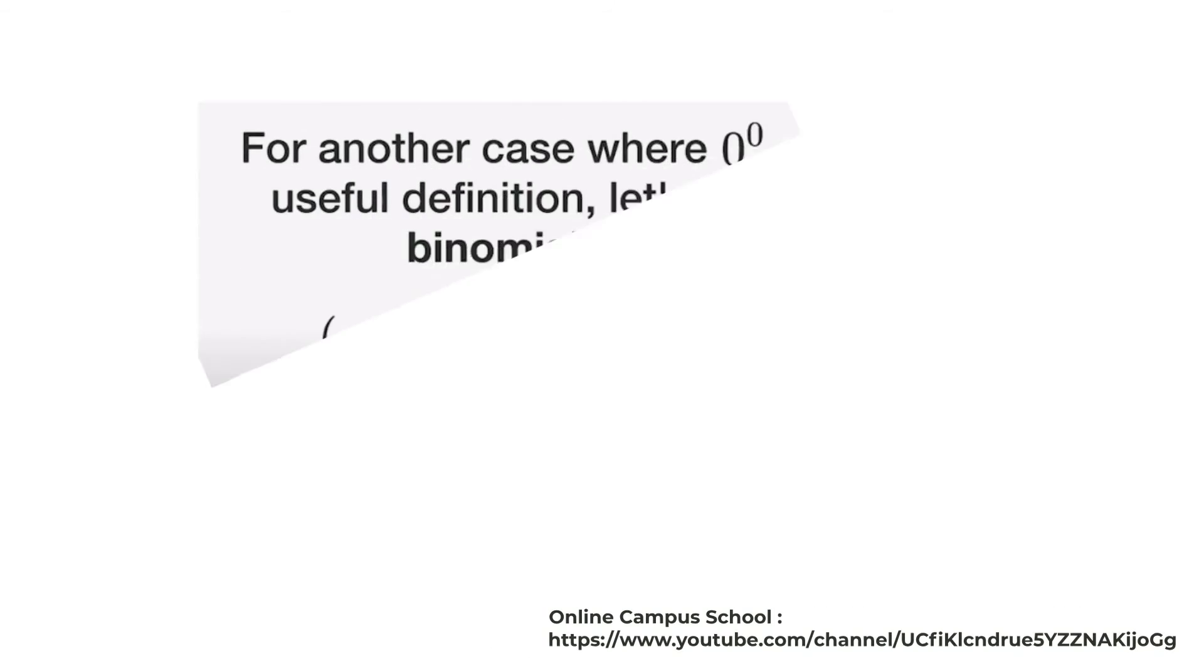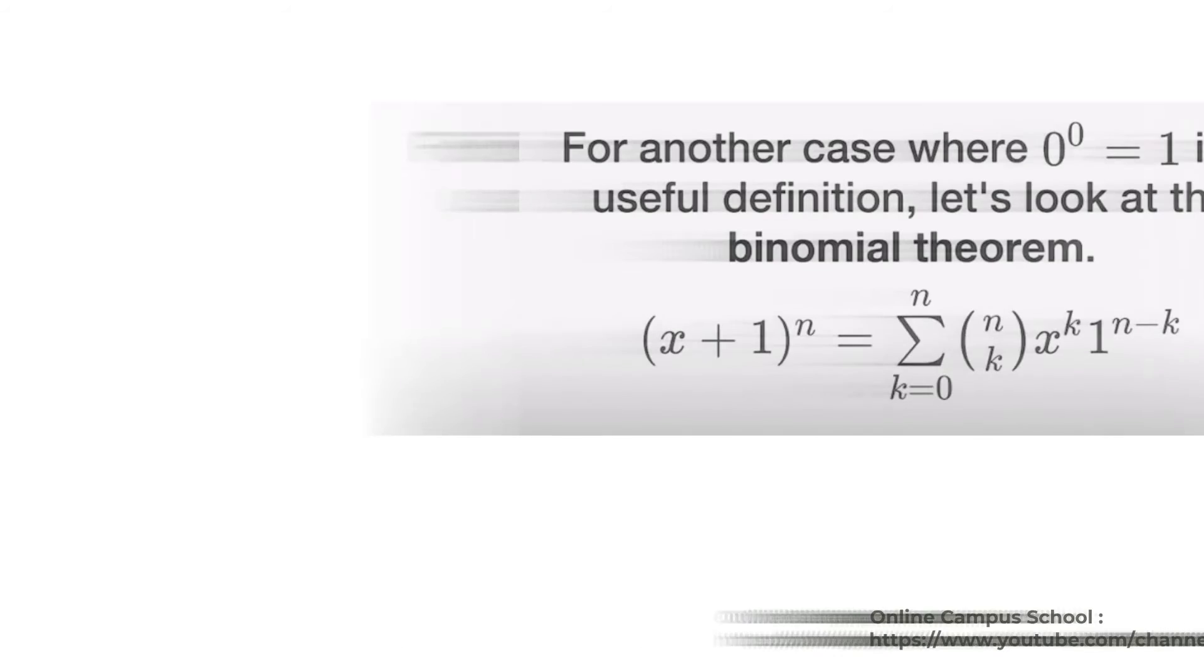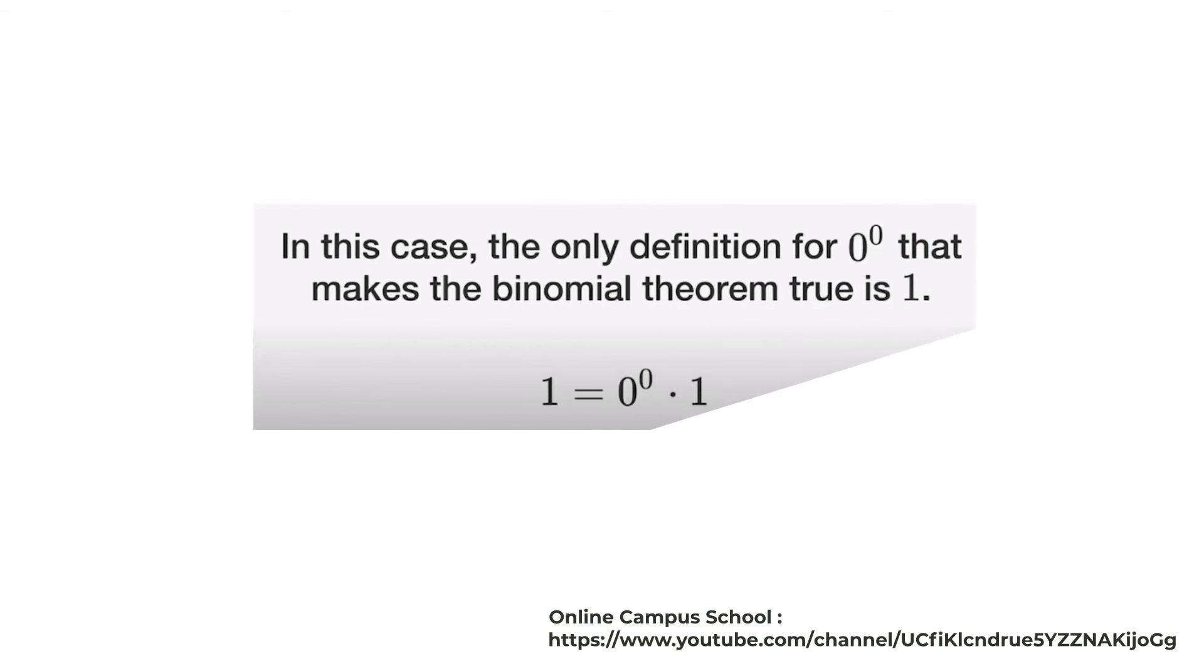For another case, let's look at the binomial theorem. So when x equals zero, this implies that one equals zero to the power of zero times one. In this case, the only definition for zero to the power of zero that makes the binomial theorem true is one.